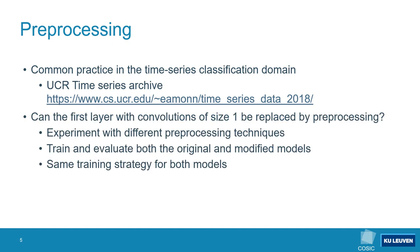This made us wonder if we could simply remove the first convolutional layer with filters of size 1 and instead preprocess the raw traces. To that end, we train the original networks on traces that were preprocessed using multiple techniques. We also perform the same experiments on modified networks in which the first convolutional layer is removed. Each combination of network and preprocessing strategy is trained 10 times on different splits of the training data, to ensure that the networks and training procedure yield stable results. Both the original and modified models are trained in the same way with the same number of epochs.